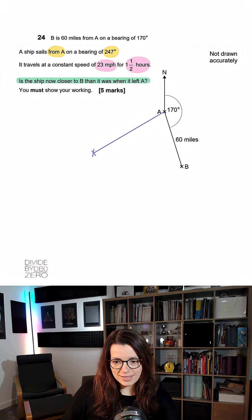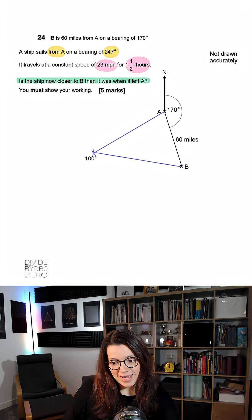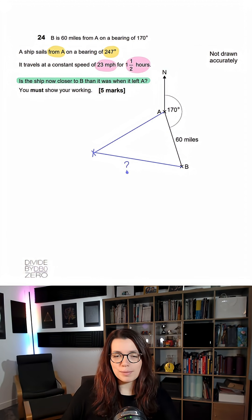And what we want to know is, is the ship now closer to B than it was when it left A? So really we want to know what this distance is. As you can see, we've now made a triangle, which will probably be helpful.